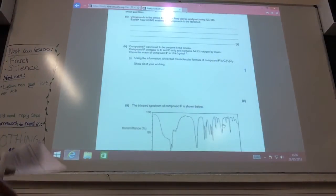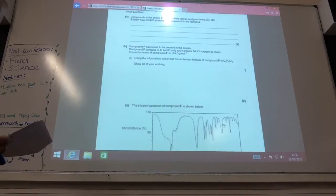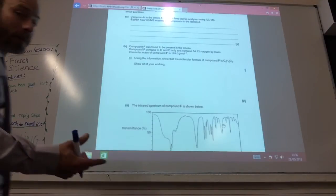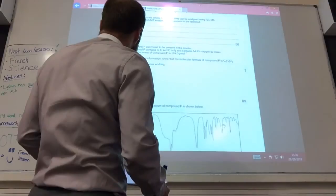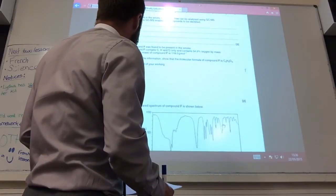Alright, for the next one then, how does GC-MS enable the compounds to be identified? Gas chromatography separates the components and the mass spec identifies the compounds by comparison with a database. That's come up a few times.